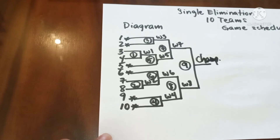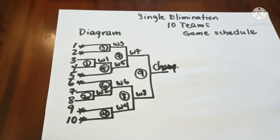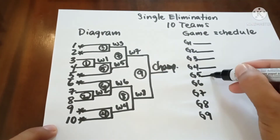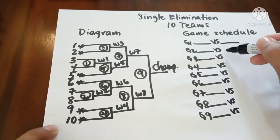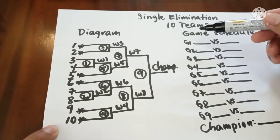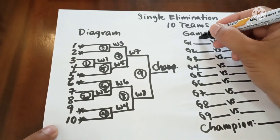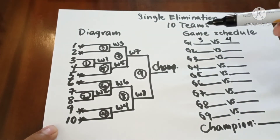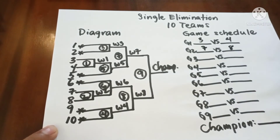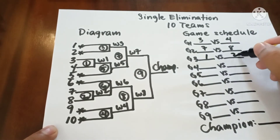Now let us proceed to the game schedule. We have 9 games. Now let us interpret the diagram. In game 1, we have teams 3 and 4. In game 2, we have teams 7 and 8. In game 3, we have teams 1 and 2.